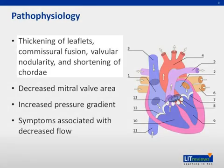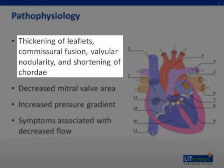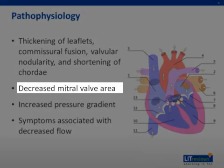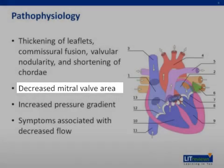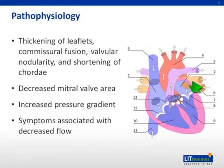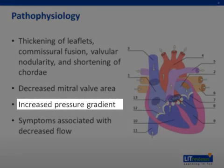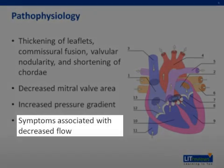MS is caused by thickening and calcification of valve leaflets, subsequent commissural and chordal fusion and valvular nodularity. This leads to a narrowing of the mitral valve orifice, shown as number 7 in the diagram. As the stenosis of the valve increases and the valve area decreases, there is an increase in the pressure gradient across the mitral valve, causing decreased blood flow across the mitral valve. The final development of symptoms in many patients is often related to the loss of an atrial kick, often associated with atrial fibrillation.